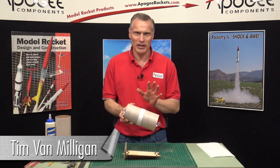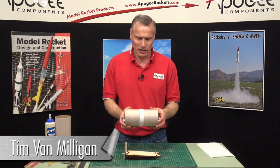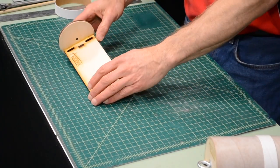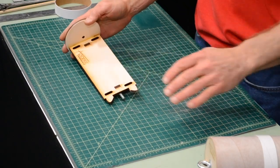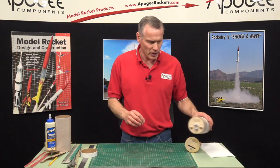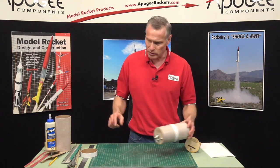We're in the middle of the build on the 4-inch eBay kit and last time we had glued the bulkhead here to the sled. While the glue is drying we can go ahead and glue the switch band onto the coupler.